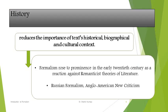The formalist approach reduces the importance of a text's historical, biographical, and cultural context. Formalism rose to prominence in the early 20th century as a reaction against romanticist theories of literature, which centered on the artist and individual creative genius. Instead, it placed the text itself back into the spotlight, showing how the text was indebted to form and the words that had preceded it. Two schools of formalist literary criticism developed: Russian formalism, and soon after, Anglo-American New Criticism.